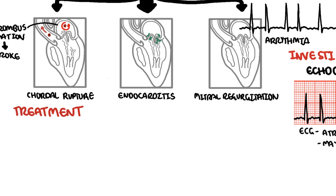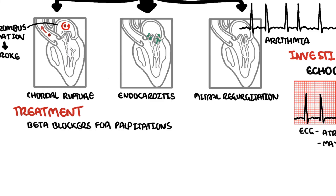In terms of management, beta blockers are used for symptomatic mitral valve prolapse where one has palpitations and chest discomfort. However, if complications do emerge, such as severe or symptomatic mitral regurgitation, then other medications are included, and possibly mitral valve replacement or repair.